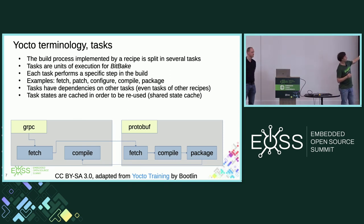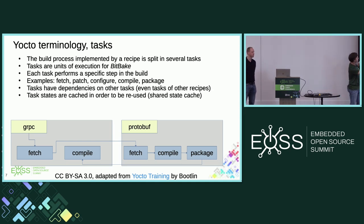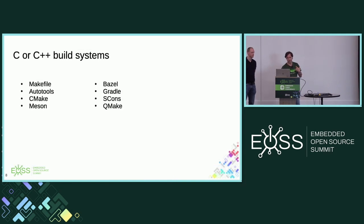The granularity is such that you can set dependencies between different recipes and different tasks. For example, there is a gRPC and protobuf recipe — in order to compile gRPC, you need to have protobuf available. But that doesn't mean you have to execute everything in order. You can first fetch and compile protobuf, and then already compile gRPC. Yocto is also able to cache those tasks to speed up subsequent builds — this is called the shared state cache.